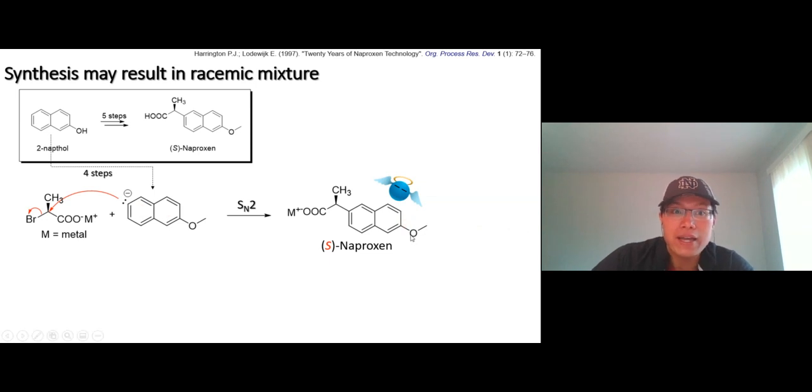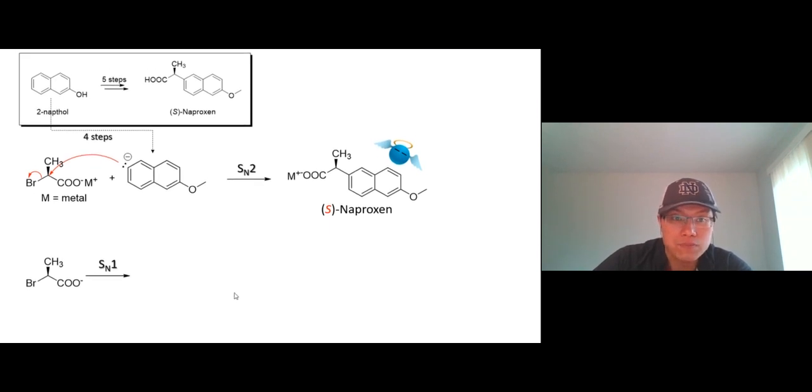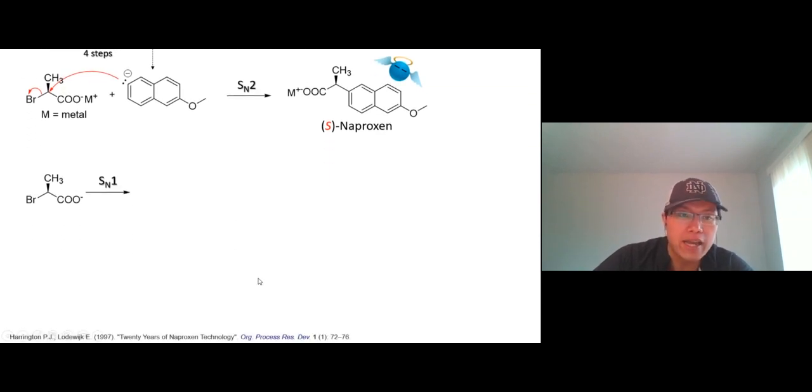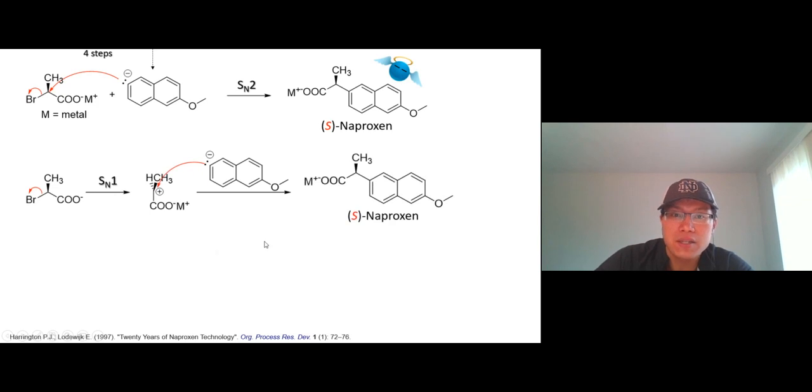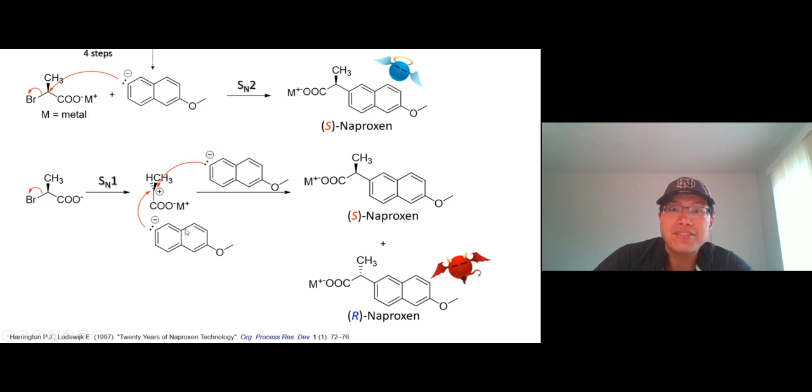However, if you don't know and this happened - if this reaction were to go SN1 reaction, bromine leaves first. I'm sure you can guess now what I'm gonna say. Bromine leaves first, you get a carbocation, and this guy right here gonna attack from front side or the back side. In this case, your final solution gonna be a mixture between a medicine and a toxin.